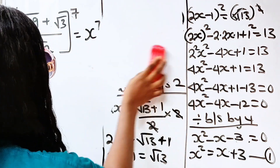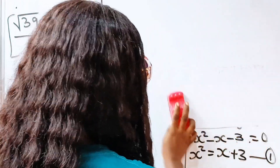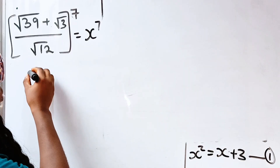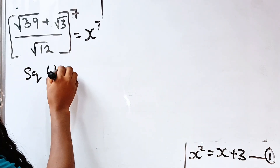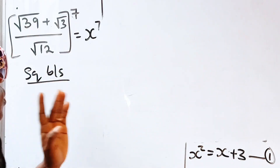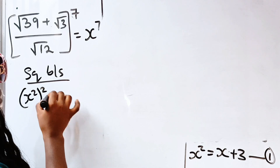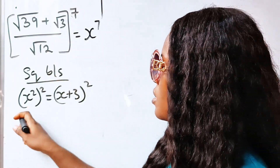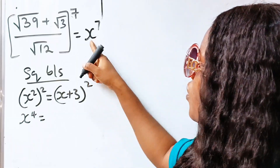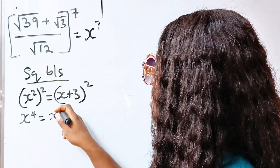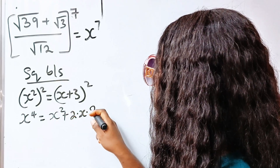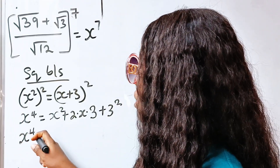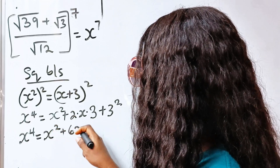Now we continue. As I said, the equation we just formed — x squared equals x plus 3 — is the most important equation. We are going to square again with the intention of getting x to the power of 4. Squaring both sides: (x²)² equals (x plus 3)², which gives x to the power of 4 equals x² plus 2 times x times 3 plus 3 squared, so x to the power of 4 equals x squared plus 6x plus 9.